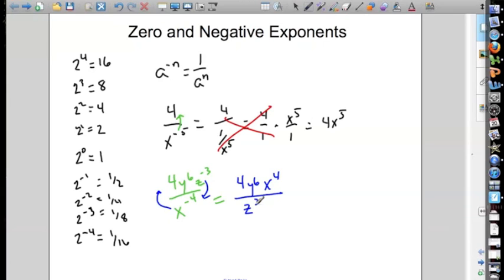So negative exponents will cause it to switch sides because of the math that happens when you multiply by the reciprocal. The negative is just a notation that is used to describe a fraction.